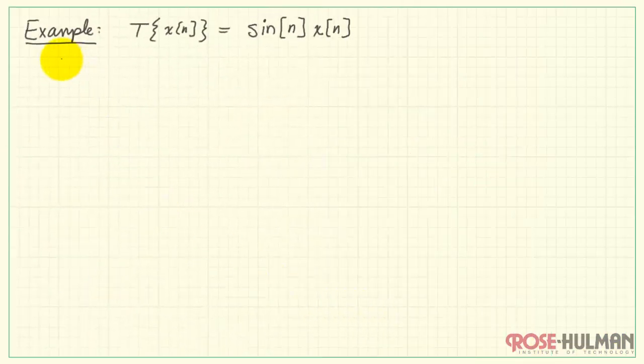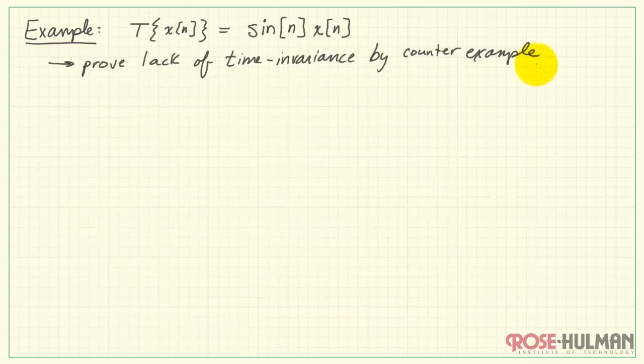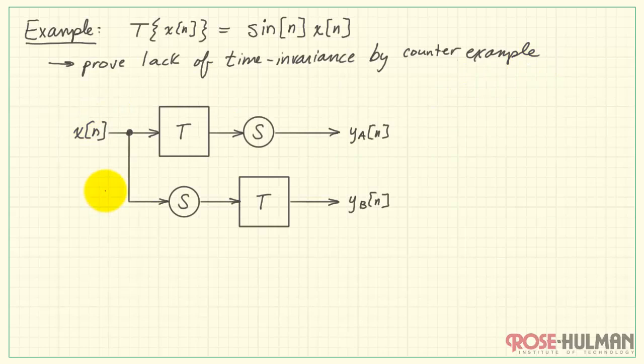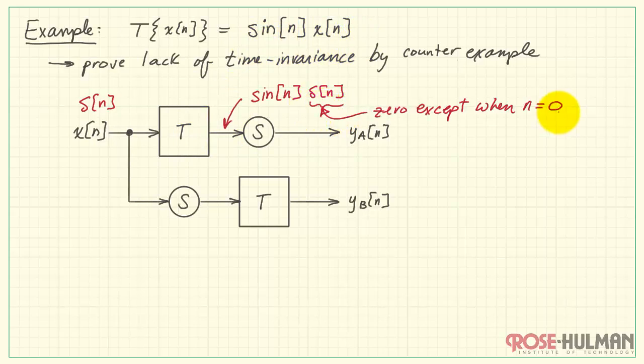Now, before I leave this example, I'd like to point out another way to establish the proof. That is, we can prove lack of time invariance by a counterexample. That is, if I can find a specific input X for which YA is not equal to YB, then we can prove lack of time invariance. Sine of N times delta of N. Well, the delta function is 0 except when N equals 0. But N equals 0 is precisely when sine of N is equal to 0. Therefore, the output on the top track is 0.